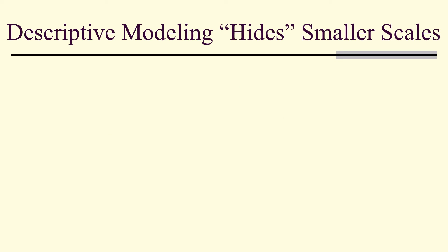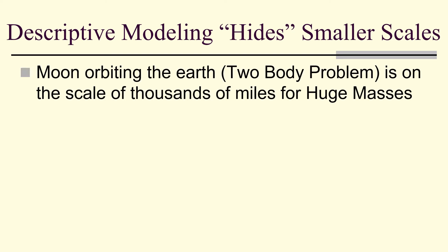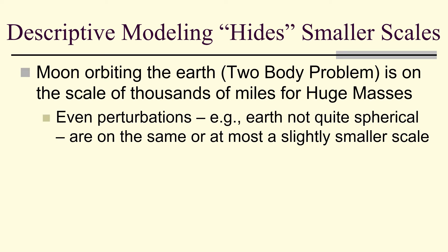Descriptive modeling, therefore, hides smaller scales. So, for instance, the moon orbiting the earth is on the scale of thousands of miles for huge masses. So, perturbations, the earth isn't quite spherical, still is on the same scale or at most a slightly smaller scale.